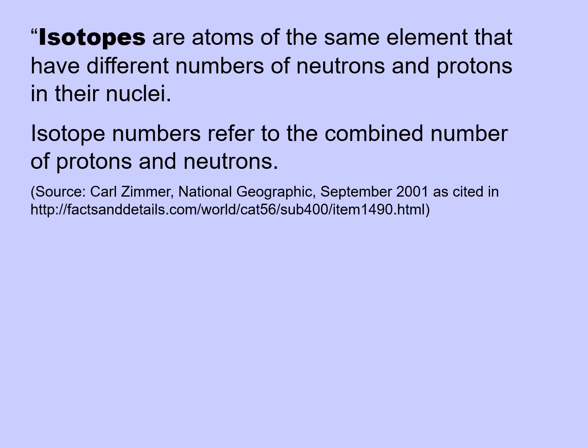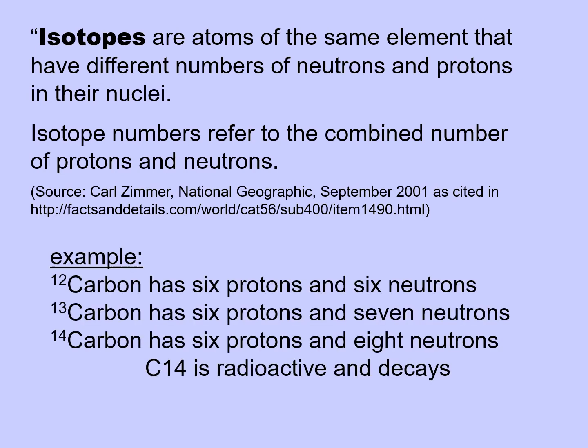Isotopes are atoms of the same element that have different numbers of neutrons and protons in their nuclei. The isotopic number refers to the combined number of protons and neutrons. For example, carbon-12 has six protons and six neutrons (6 + 6 = 12), whereas carbon-13 has six protons and seven neutrons. Both carbon-12 and carbon-13 are stable isotopes. Carbon-14, on the other hand, is a radioactive isotope — it has six protons and eight neutrons, and being radioactive it will decay through time.